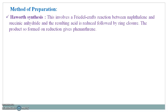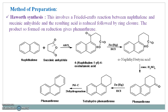The second one is the Haworth synthesis. This involves a Friedel-Crafts reaction between naphthalene and succinic anhydride in the presence of aluminum chloride, and the resulting acid is reduced followed by ring closure. The naphthalene reacts with succinic anhydride to give a keto acid attached at the alpha position of the naphthalene ring. Further, on reduction it gives alpha-naphthalbutyric acid, and on treatment with concentrated sulfuric acid the ring gets closed to form phenanthrone. Further on reduction it gives tetrahydrophenanthrene, and on dehydrogenation this gives phenanthrene.